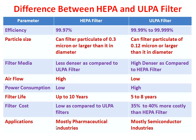Now for applications: HEPA filters are mostly used in pharmaceutical industries and medical applications, whereas ULPA filters are mostly used in semiconductor industries and electronic industries. So this is all about today's video.